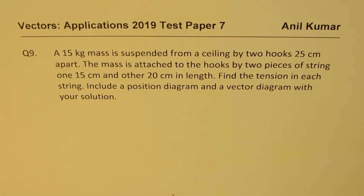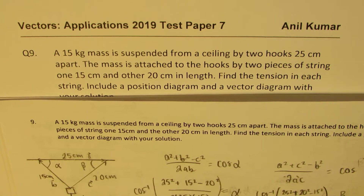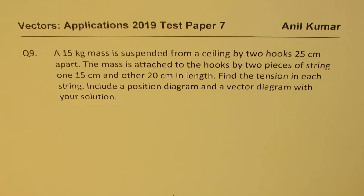I am Anil Kumar, welcome to my series on vectors. I'm sharing some test questions on application of vectors from a very recent test paper, 2019. The question is: a 15 kg mass is suspended from a ceiling by two hooks 25 cm apart. The mass is attached to the hooks by two strings, one 15 cm and the other 20 cm in length. Find the tension in each string. Include a position diagram and a vector diagram with your solution. Pause the video and answer before looking at my suggestions.